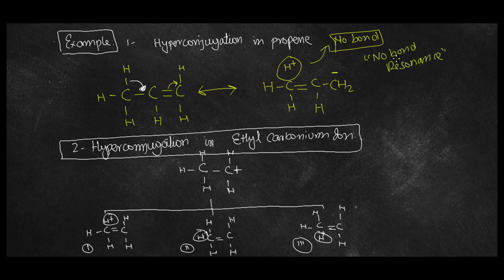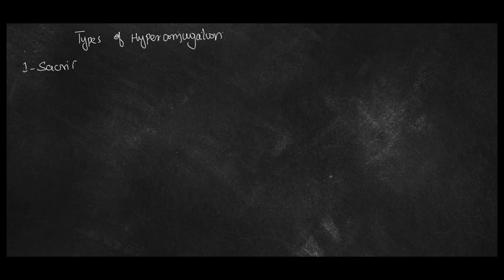Now let's discuss about types of hyperconjugation. There are basically two types of hyperconjugation: one is sacrificial hyperconjugation and second is isovariant hyperconjugation.